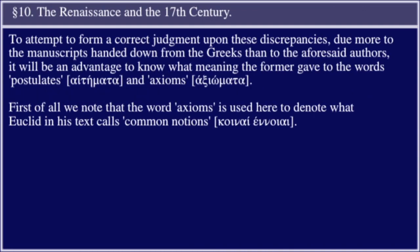To attempt to form a correct judgment upon these discrepancies, due more to the manuscripts handed down from the Greeks than to the aforesaid authors, it will be advantageous to know what meaning the former gave to the words postulates and axioms. First of all, we note that the word axioms is used here to denote what Euclid in his text calls common notions.